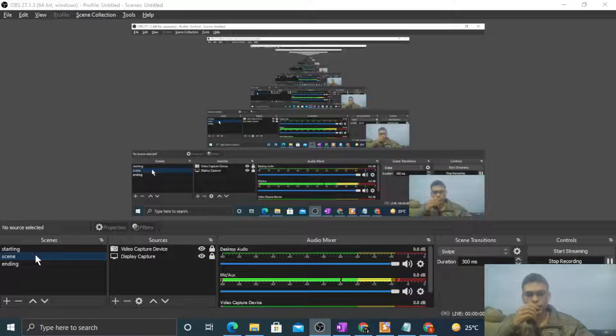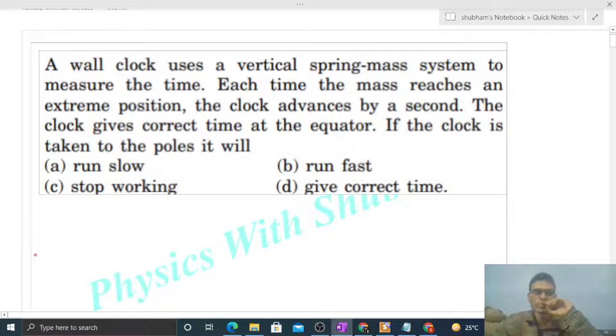Hi everyone, today let's discuss this interesting problem. It says a wall clock uses a vertical spring-mass system to measure the time. Each time the mass reaches an extreme position, the clock advances by a second.